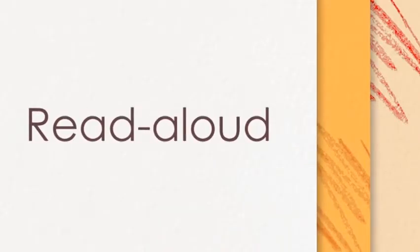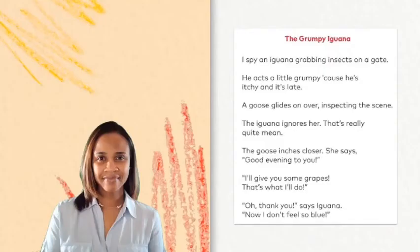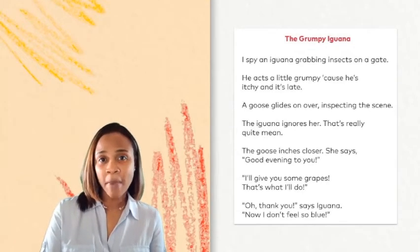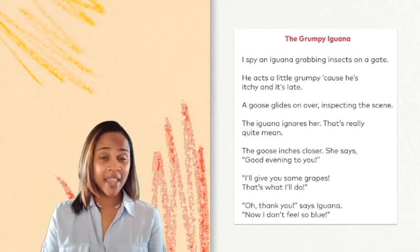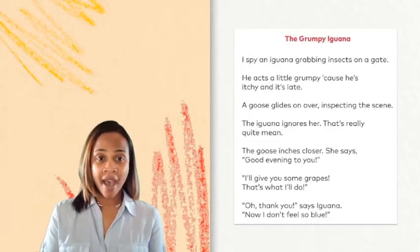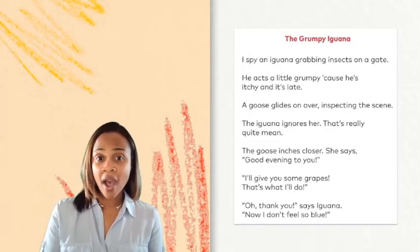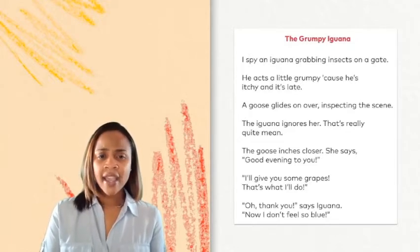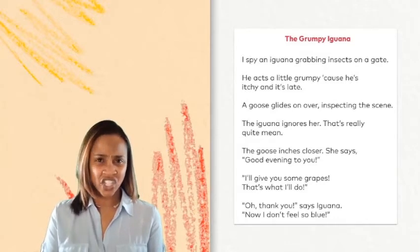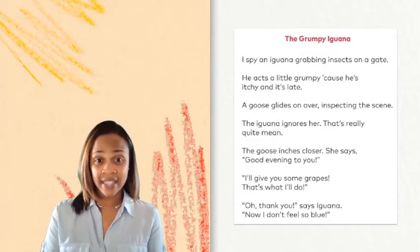Let's read our poem, The Grumpy Iguana. I spy an iguana grabbing insects on a gate. He acts a little grumpy because he's itchy and it's late.